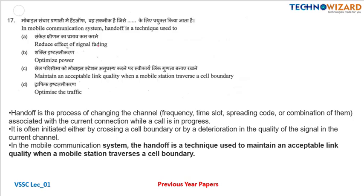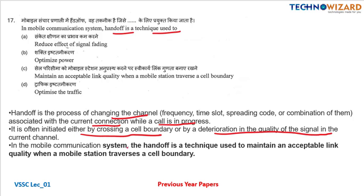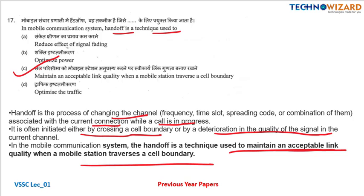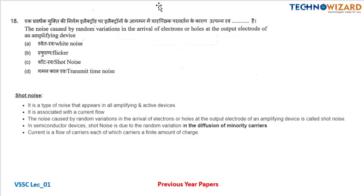Question number seventeen: in mobile communication, handoff is a technique used to maintain an acceptable link. Handoff is the process of changing the channel, frequency, time slot, spreading code, or a combination of them associated with the current connection while a call is in progress. It is initiated by crossing a cell boundary or by deterioration of signal quality. Option C is the correct answer.